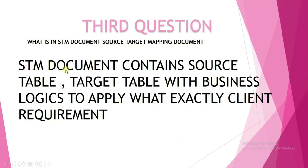The third question: what is an STM document, that is, the Source Target Mapping document? The STM document contains the source table, target table, and business logics to apply based on client requirements. It is an Excel document where the product owner collects requirements from the client. It includes source and target column names, column numbers, data types, data sizes, and what business logics need to be applied.